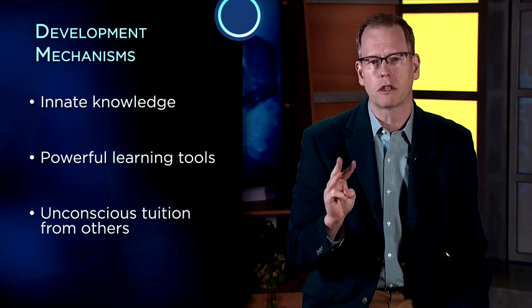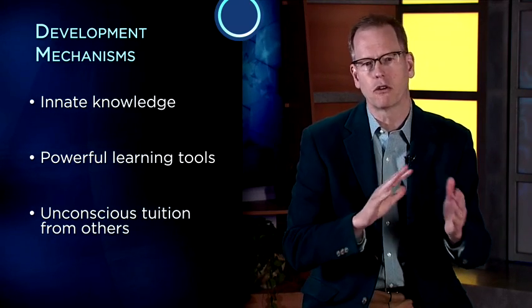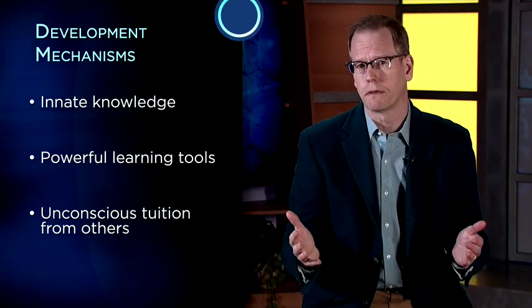Current theories are much more specific and dynamic. The most exciting questions now in developmental psychology and neuroscience are concerned with determining exactly what is built into humans at birth and how and when those things interact with the environment throughout development. To guide us, we'll borrow from one of my favorite books on child development, The Scientist in the Crib, written by three leaders in the field: Allison Gopnik at UC Berkeley, and Andrew Meltzoff and Patricia Kuhl at the University of Washington. The book outlines three major mechanisms that drive development: one, innate knowledge; two, powerful learning tools; and three, unconscious tuition from others.